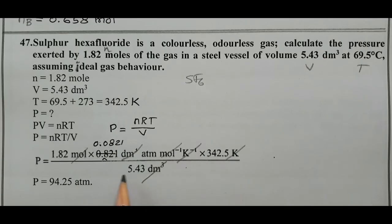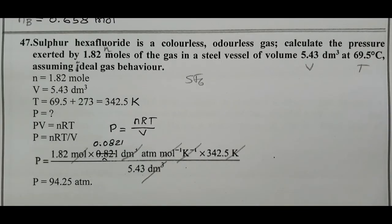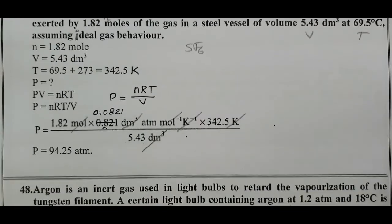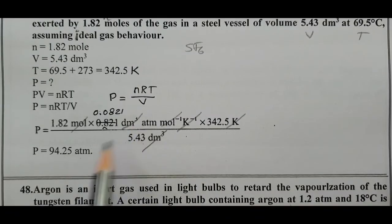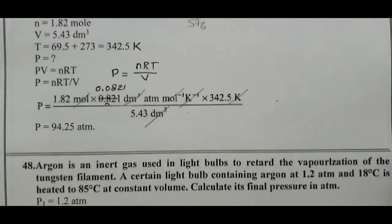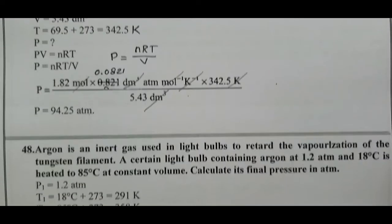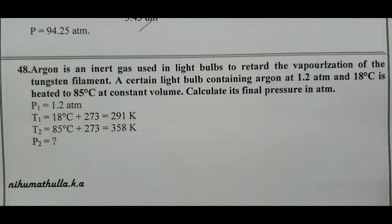Dividing: the final pressure is 9.425 atm — that is the pressure value for question number 47.